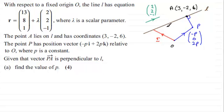So I would know that the dot product, or scalar product, of this vector (2, 2, -1) with AP is going to equal 0. And that will give me an equation which I can solve then for p. So that's the method that I'm going to use.